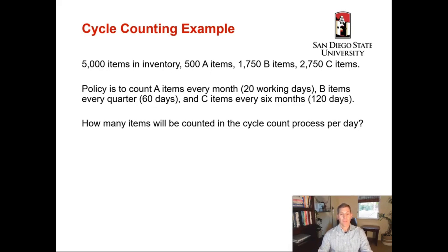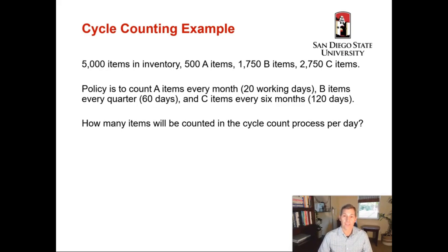Before diving in, remember we have 5,000 items in inventory. We're going to count A items once a month — 12 times per year — because they're more expensive and more critical to our organization. Once a month, someone will physically walk to that stock location and count however many items are there for that SKU: do we have 100, 99, 105? For B items we count once every quarter, and for C items just twice a year. So a C item is counted twice a year, while an A item is counted 12 times per year, showing how much more valuable those A items are.